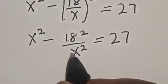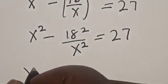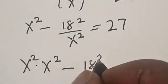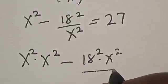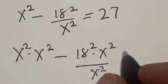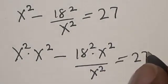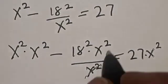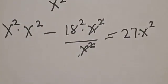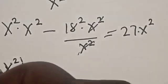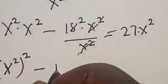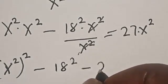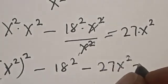Now let's multiply all through by x squared. We have x squared times x squared minus 18 squared times x squared divided by x squared, equals 27 times x squared. The x squared terms cancel, giving us x to the fourth minus 18 squared minus 27x squared is equal to 0.